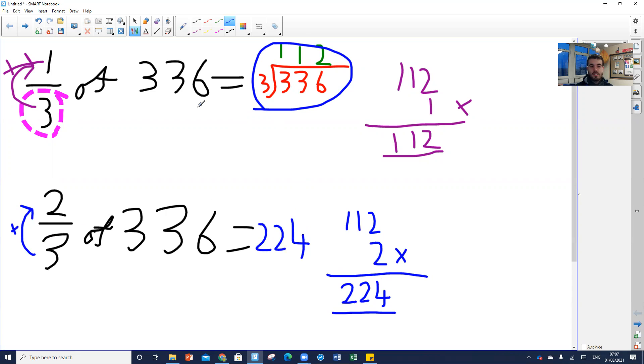So always follow that same process to find a fraction of a number. Take your big number, divide it by the number at the bottom using your bus stop, times the answer by the number at the top. Simple as that. So good luck with that.